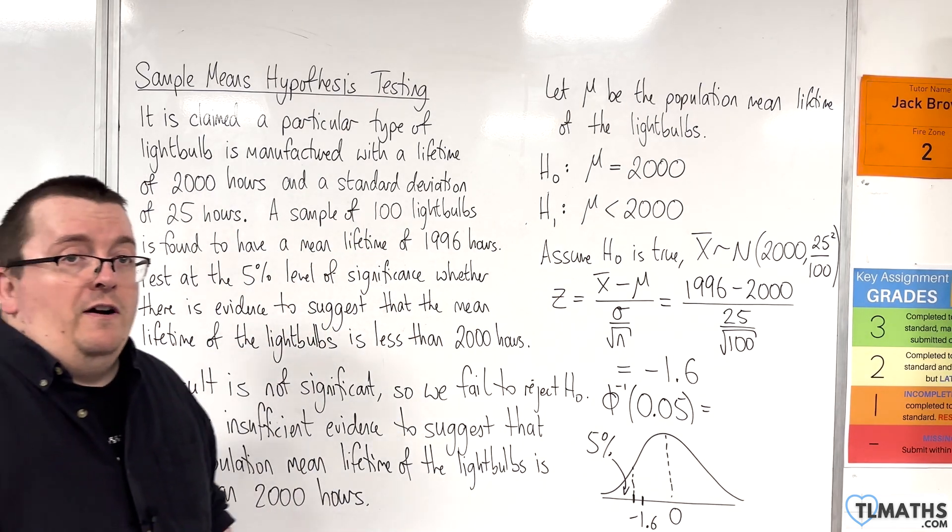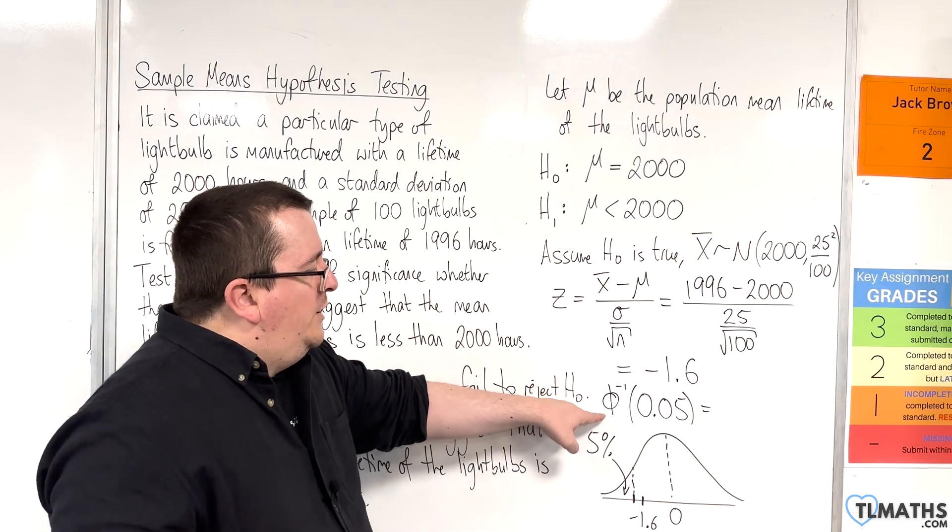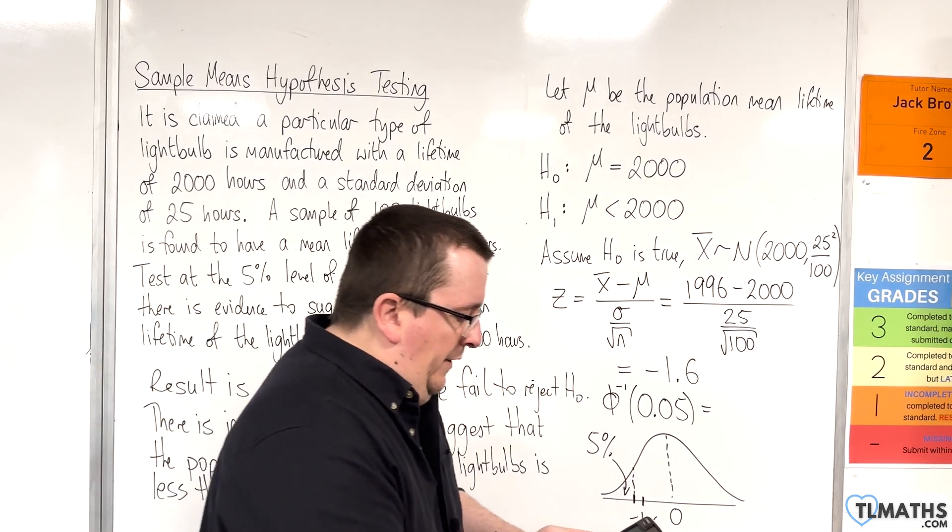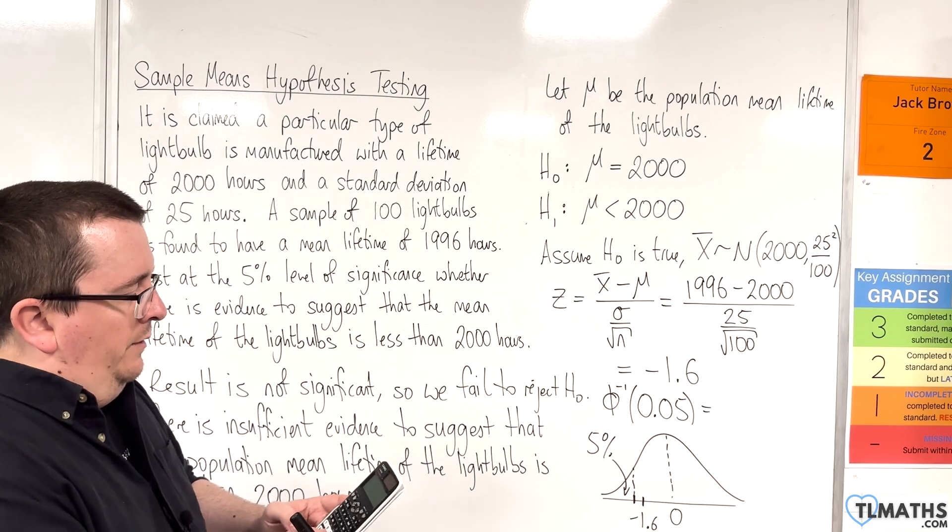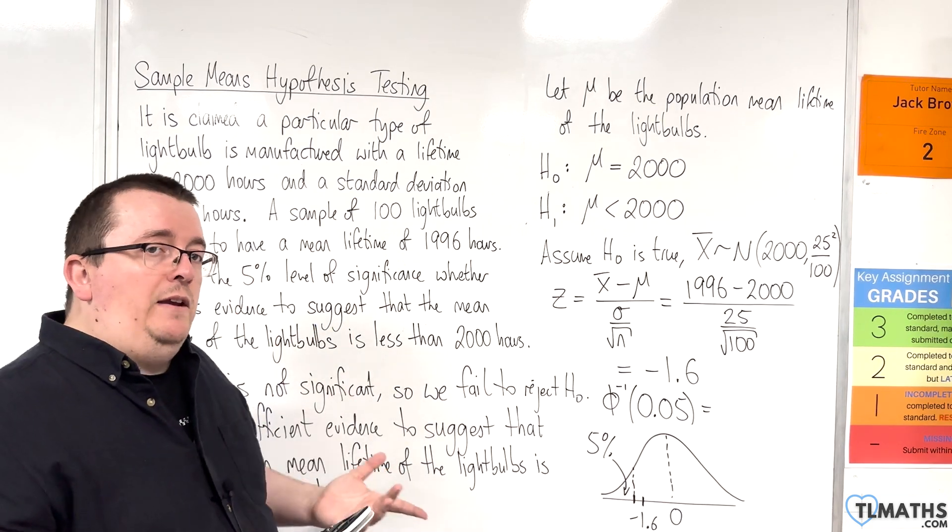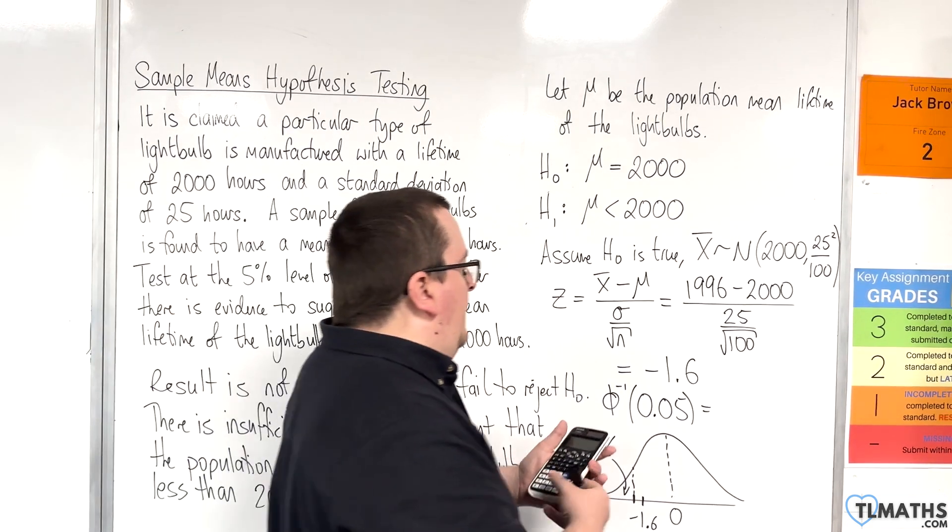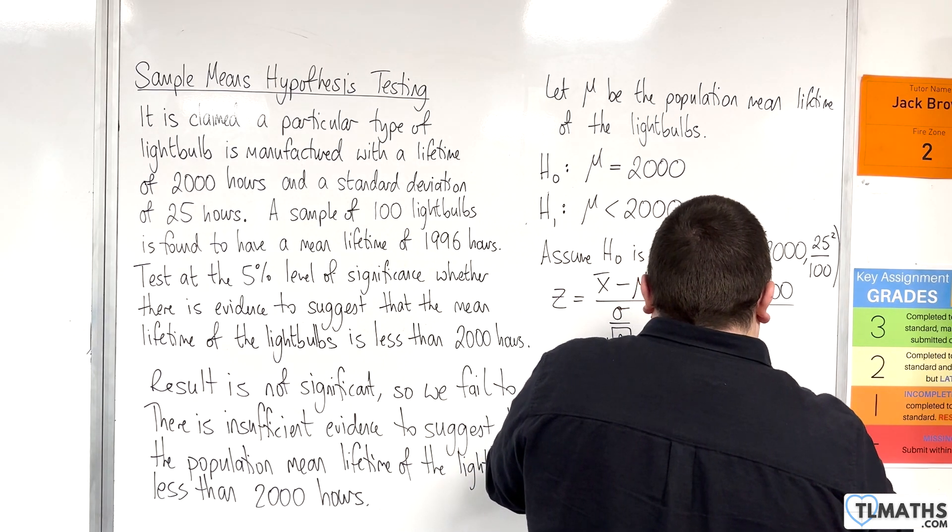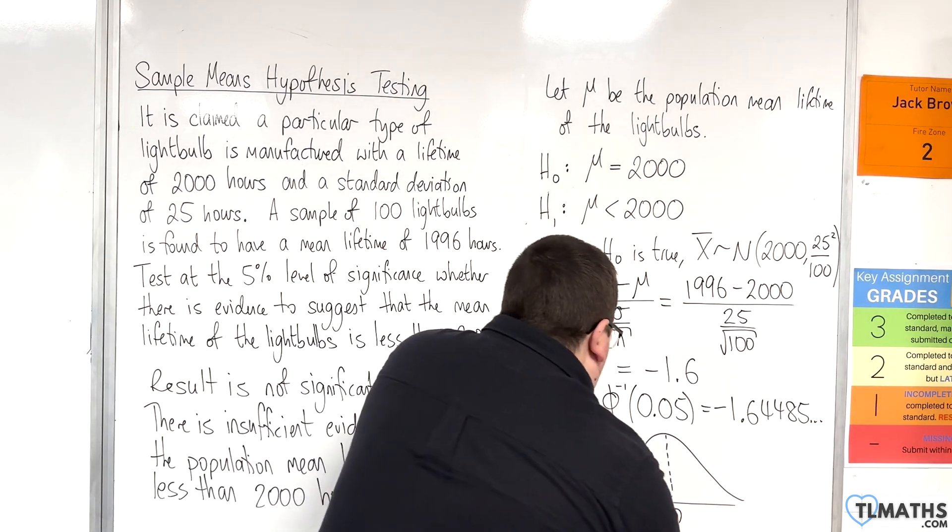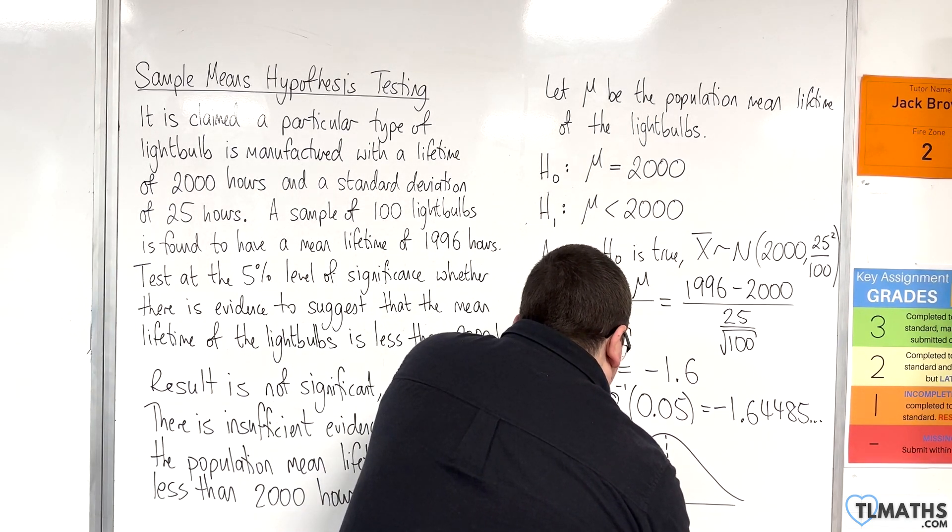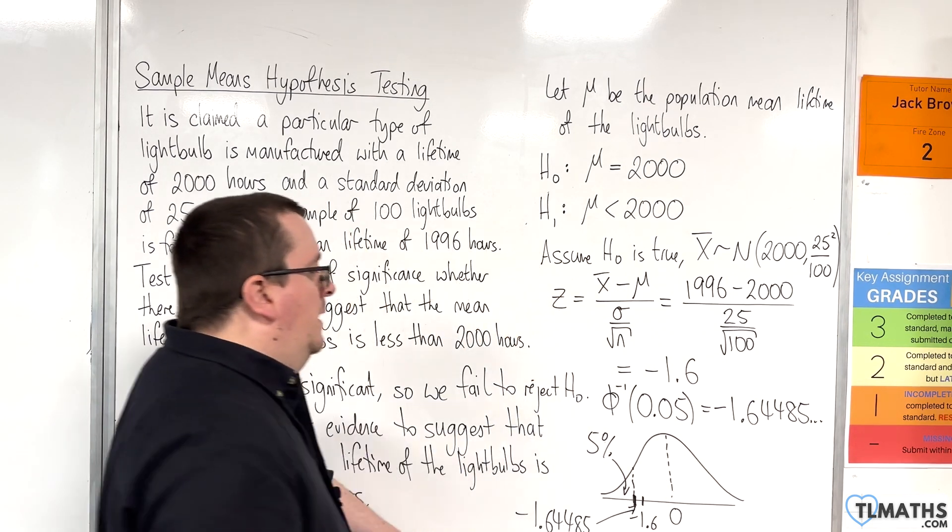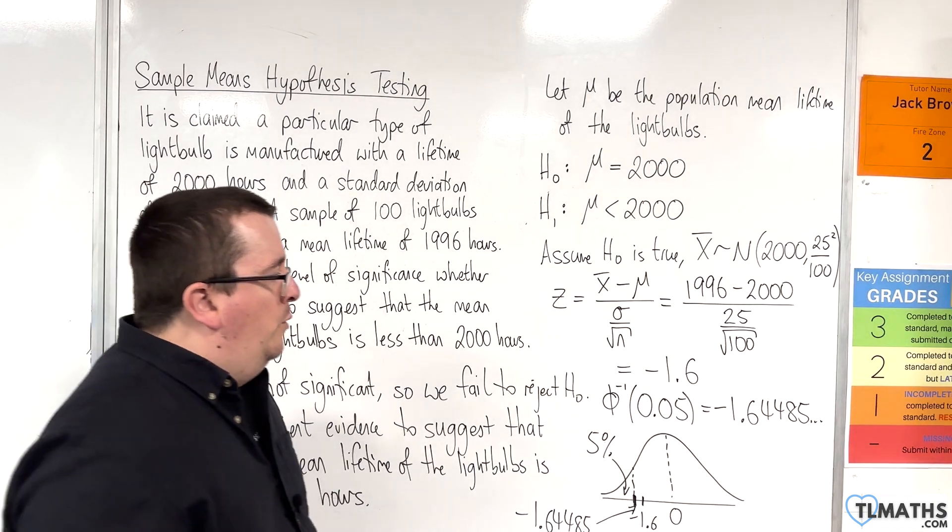So, inverse normal of 0.05 is what I'd want. So, what am I actually doing to calculate that? Well, I'm going to menu, I'm going to distributions, I'm going to go to inverse normal. I'm going to put the error in as 0.05 because I'm looking at 5%. And I put the standard deviation in as 1 and the mean as 0 because I'm looking at the standard normal. And I get minus 1.64485, etc. That is this value here. And as you can see, that is to the left of minus 1.6.